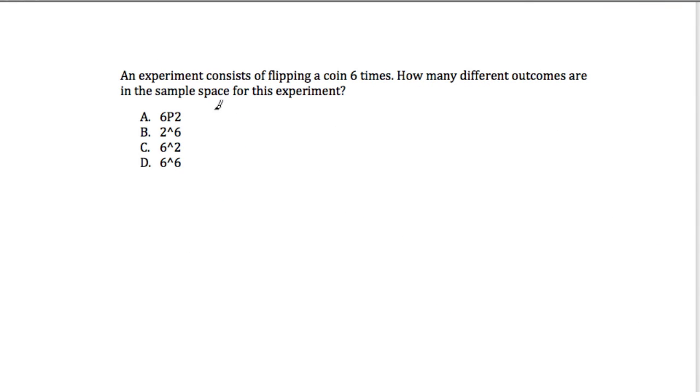And other problems. Here it says, an experiment consists of flipping a coin six times. And every time you do that, there are two options. How many different outcomes are in the sample space for this experiment?